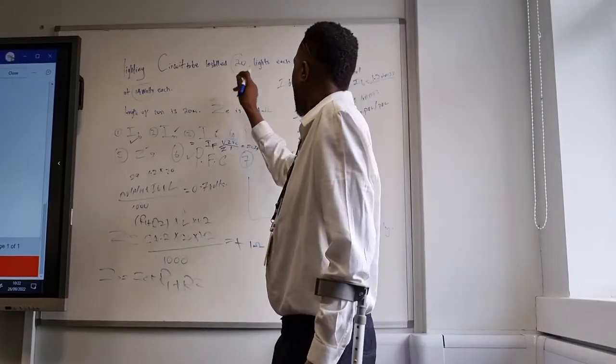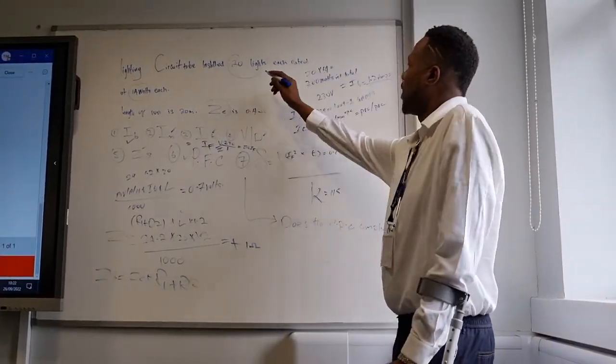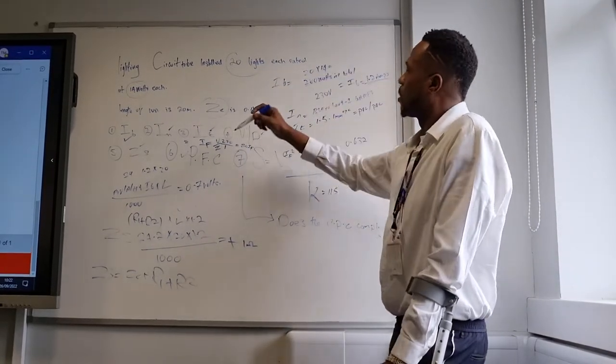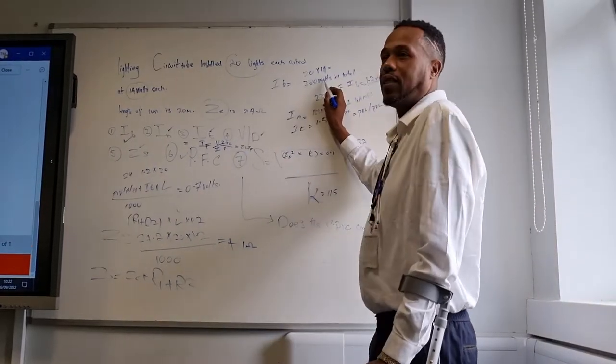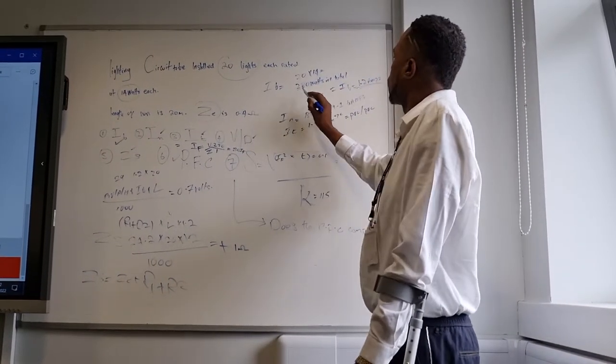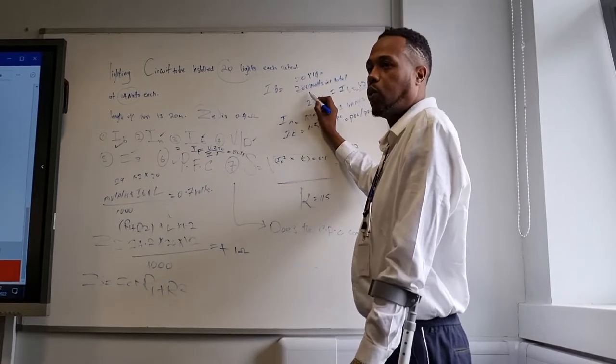The first thing you need to do is find the IB. The amount of lights, which was 20, that 20 times the wattage, which was 14. That's the first step. That should give you 280 watts total.